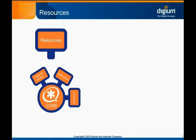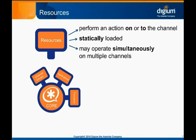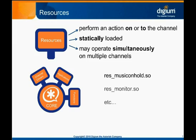Resource modules in Asterisk behave in a similar fashion to applications. Their primary use is to perform some action on or to a channel, but they are statically loaded by Asterisk and may simultaneously operate on multiple channels. Music on hold is one example of this. An application would have to play a different copy of an audio stream to every caller on hold, and would incur whatever overhead is involved with setting up and tearing down each stream. Using a resource module instead allows Asterisk to have multiple channels listening to the same music on hold stream at the same time, with little incremental overhead cost. Call recording via the res_monitor module is another example of a service provided by an Asterisk resource rather than an application. This way, call recording can happen passively while other applications run on the channel.